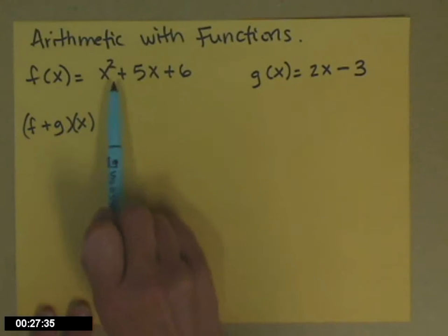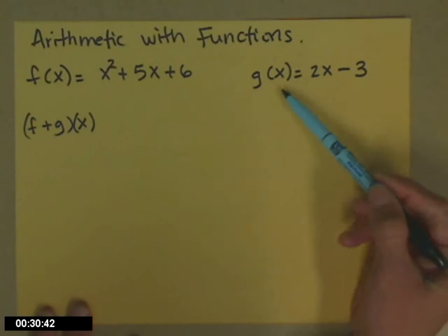For right now, we're going to use f of x equals x squared plus 5x plus 6 and g of x equals 2x minus 3.